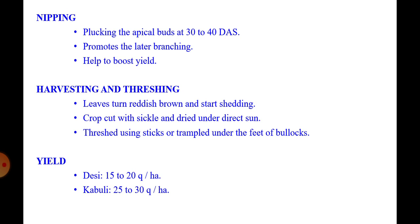Nipping helps to boost the yield. For harvesting and threshing, leaves turning reddish-brown and starting to shed is the sign of maturity. Mature plants are either pulled or cut by hand or cut with a sickle and dried under the sun for 5-6 days. Then dried plants are threshed using sticks or trampled under the feet of bullocks to separate the grains. Yield from Deshi is 15 to 20 quintals per hectare, while from Kabuli it is 25 to 30 quintals per hectare.